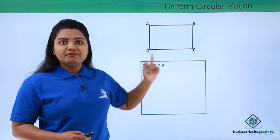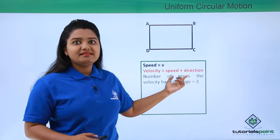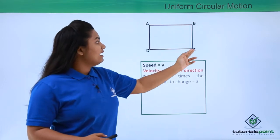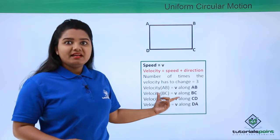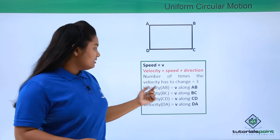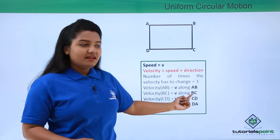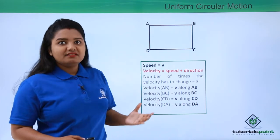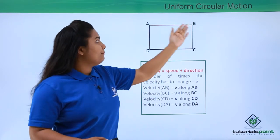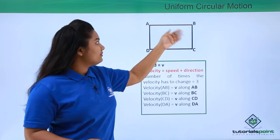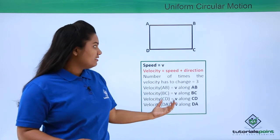So at these three points the value of velocity changed for the body, even though the speed did not change. Since there was a change in direction at these three points, we say there was a change in velocity. The number of times the velocity changed is three. Along each side of the rectangle the body had a different velocity — for example, from A to B the velocity is v along AB, and from B to C the velocity is v along BC, giving the direction of motion.